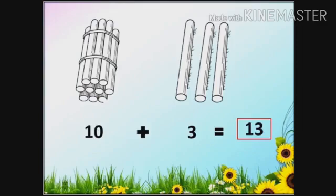Students, here there is a bundle of ten sticks, and on the other hand three sticks are there. Let us count them together: one, two, three, four, five, six, seven, eight, nine, ten, eleven, twelve, thirteen. There are thirteen sticks. That means ten plus three is equal to thirteen.